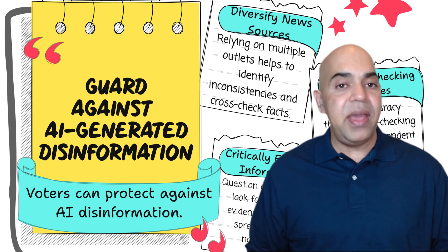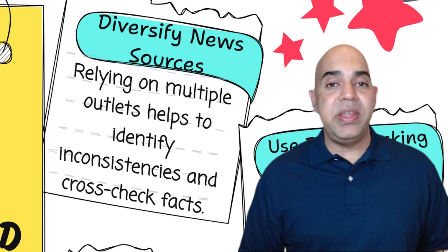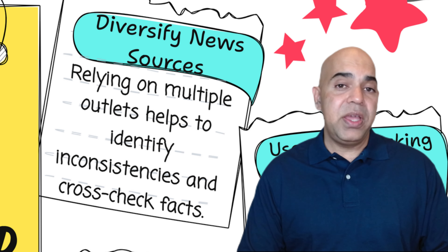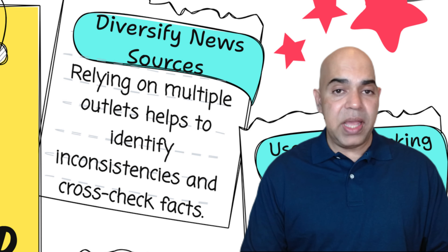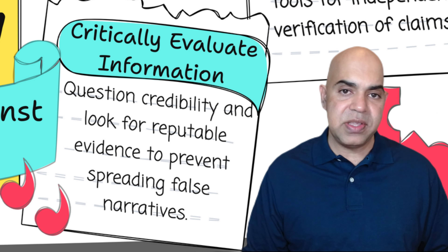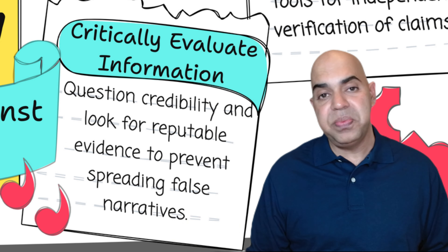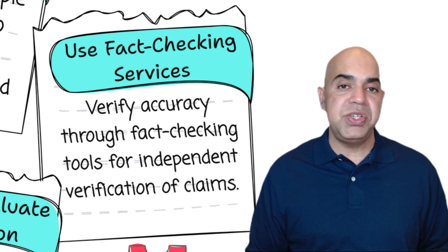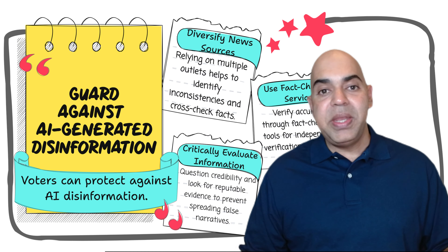How can voters protect against AI-generated disinformation? Voters can take several steps. First, diversify news sources — relying on multiple news sources provides a more balanced perspective and helps identify inconsistencies, allowing individuals to cross-check facts. Second, critically evaluate information — question the credibility and source of information, be skeptical of sensational claims, and look for evidence from reputable sources. Third, use fact-checking services — leveraging fact-checking tools and organizations can provide independent verification of claims and help debunk false information.